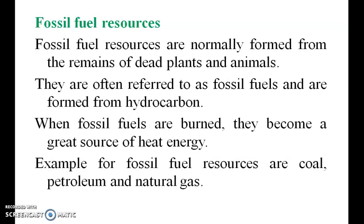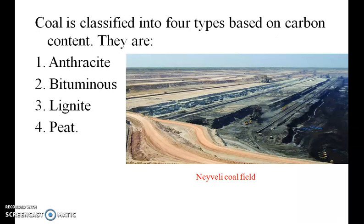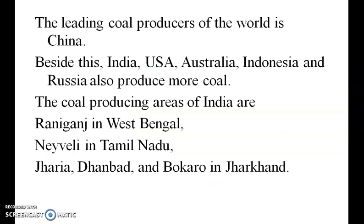Fossil fuel resources are often referred to as fossil fuels and are formed from hydrocarbons derived from dead plants and animals. Examples: coal, petroleum and natural gas. Coal: when dead plant matter is converted, it forms peat. Coal is used as a domestic fuel and in industries such as iron, steel and steam engines to generate electricity. Electricity produced from coal is called thermal power. Coal is classified into four types based on carbon content: anthracite, bituminous, lignite and peat. China is the leading producer, followed by India, USA, Australia, Indonesia and Russia. In India, West Bengal, Tamil Nadu (Neyveli) and Jharkhand are producing large amounts.